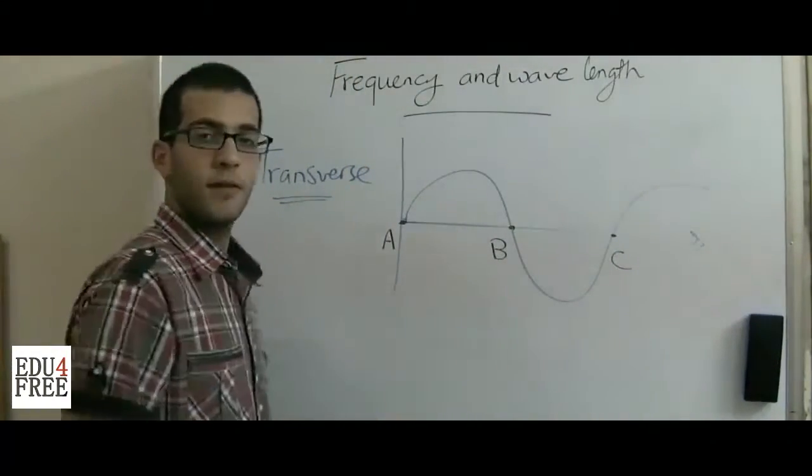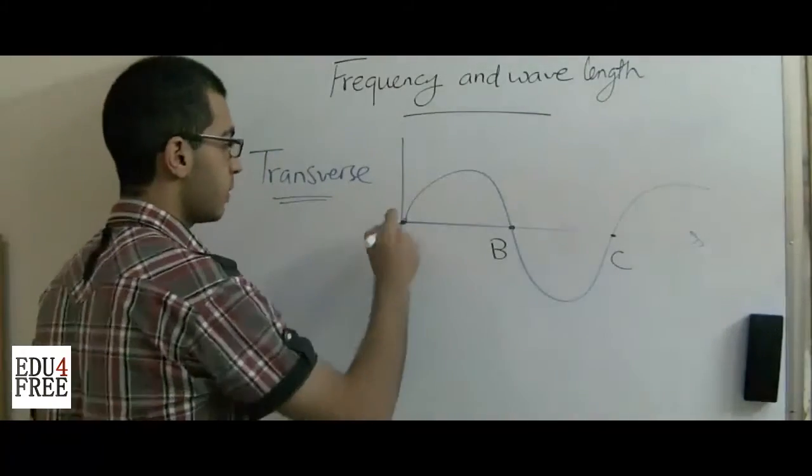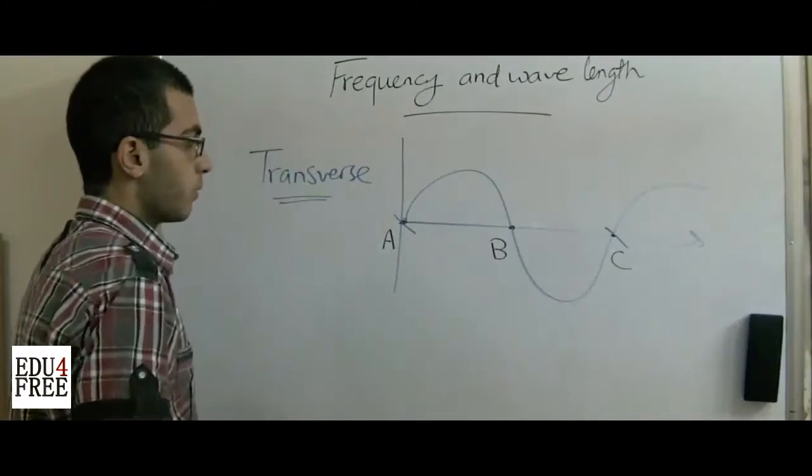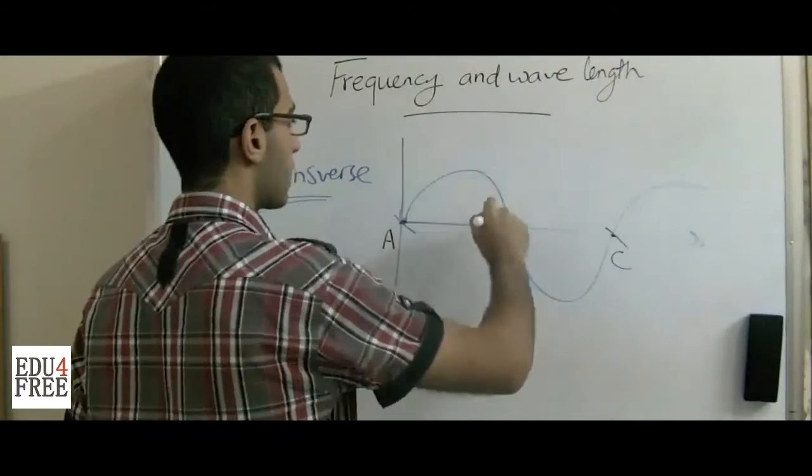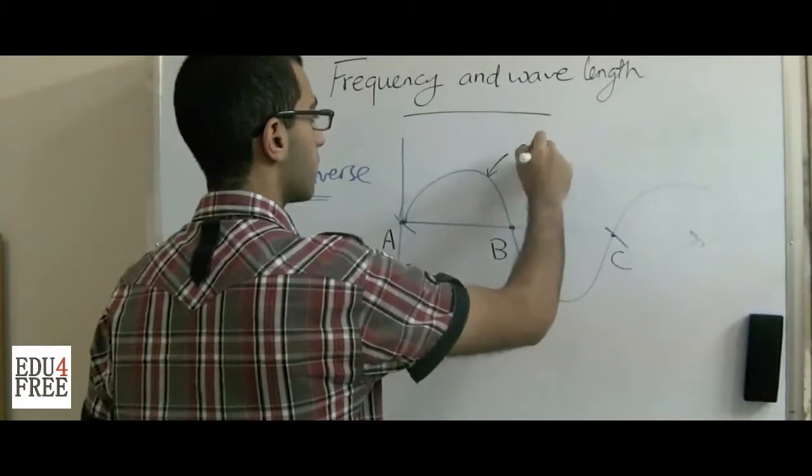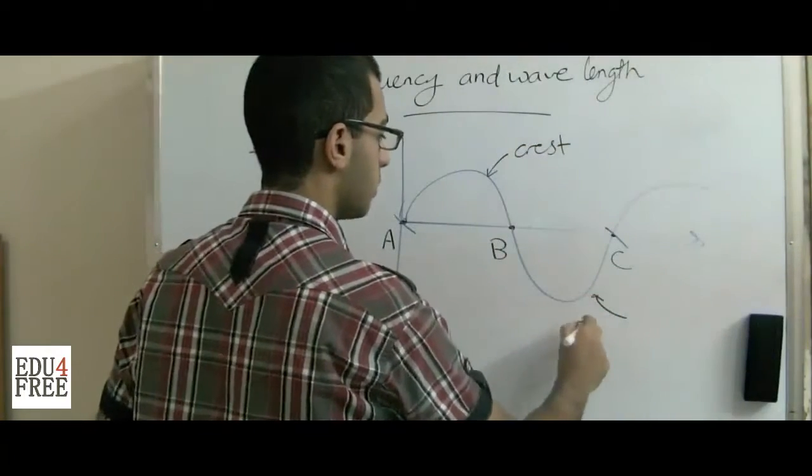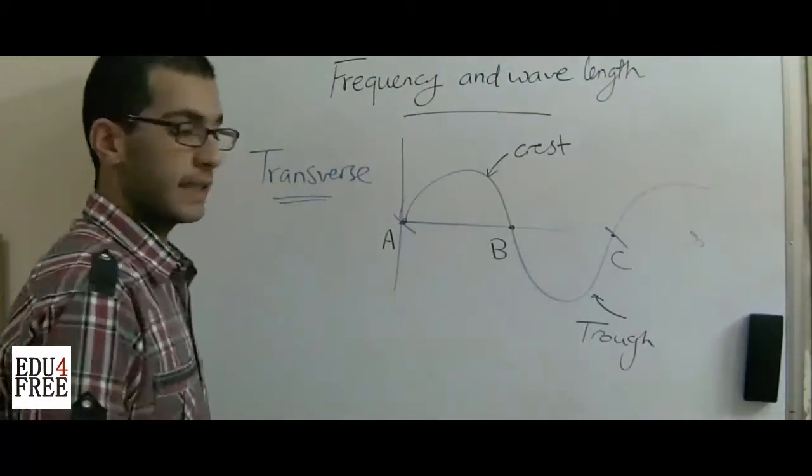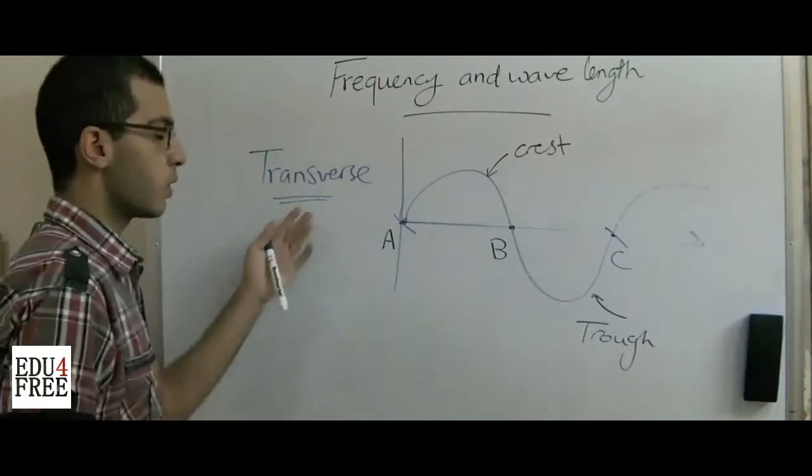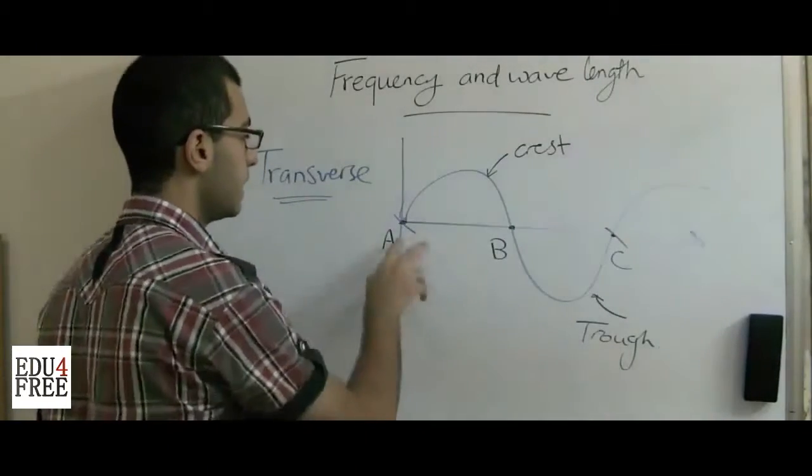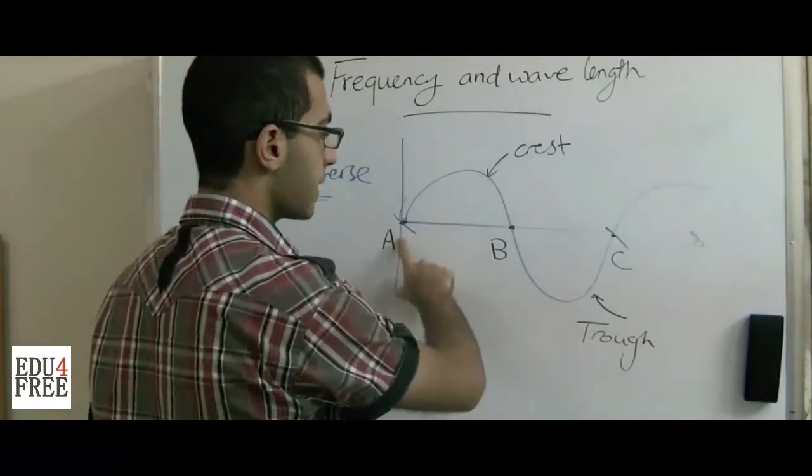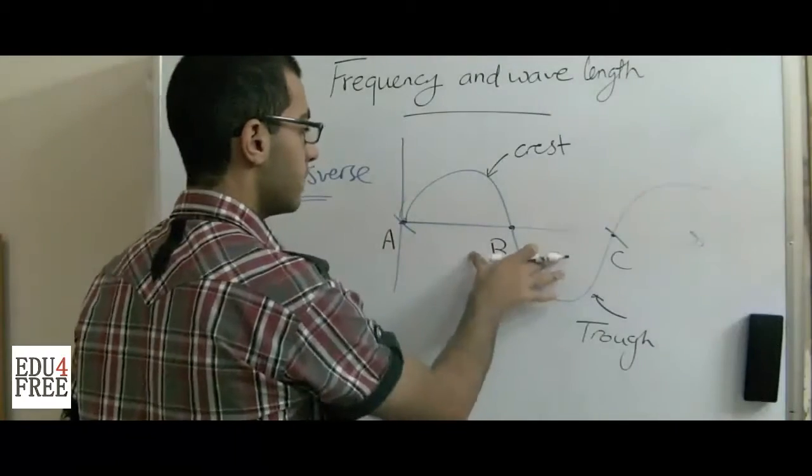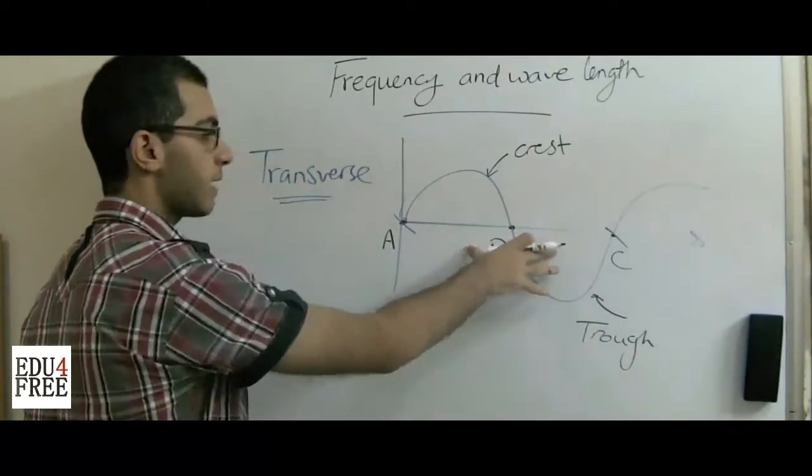Here we can define the wavelength as the distance between point A and point C. The upper part here in the diagram is called a crest and the lower part is called a trough. So we can get that the wavelength in the transverse motion is the distance between two successive crests and troughs. Here we have a crest and a trough. This is a complete wavelength.